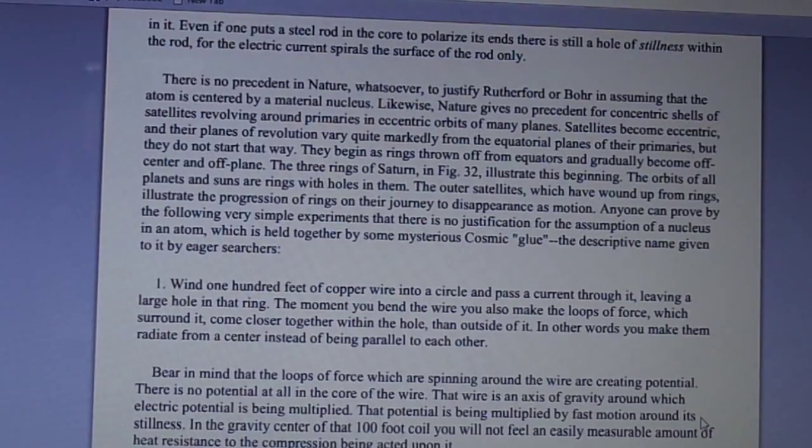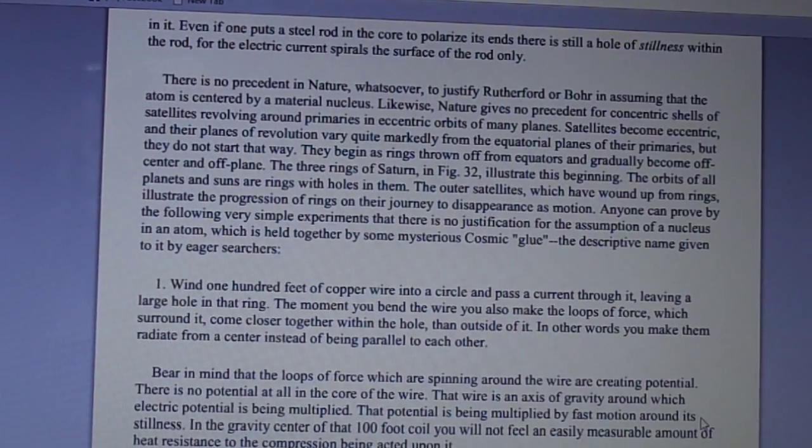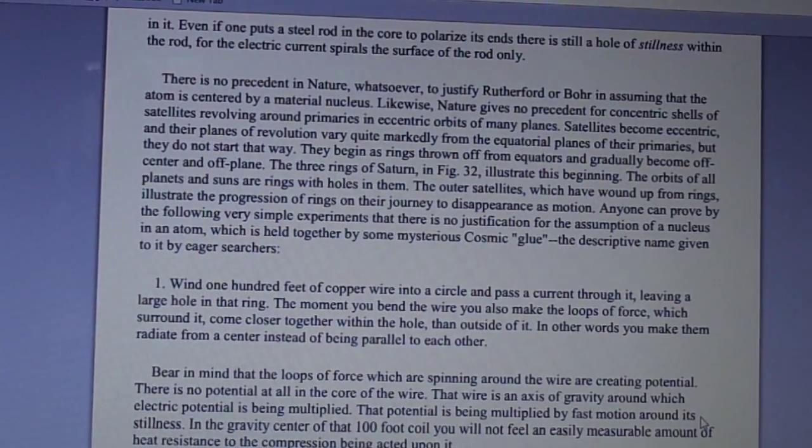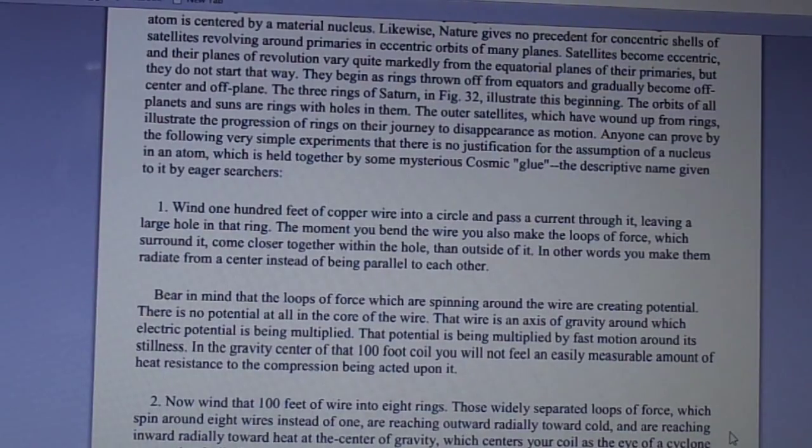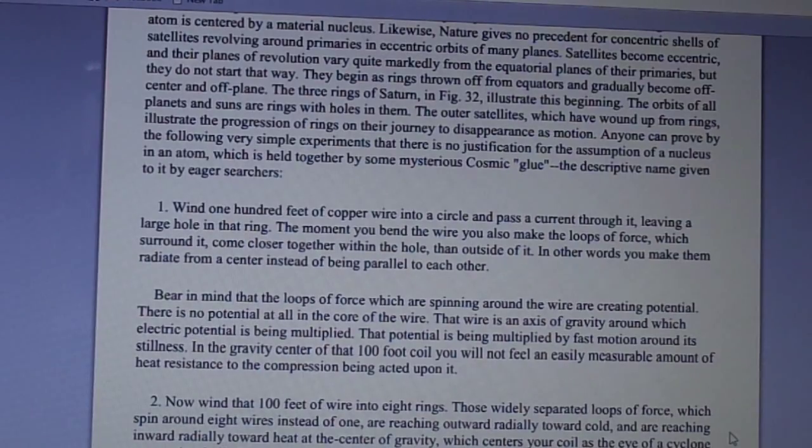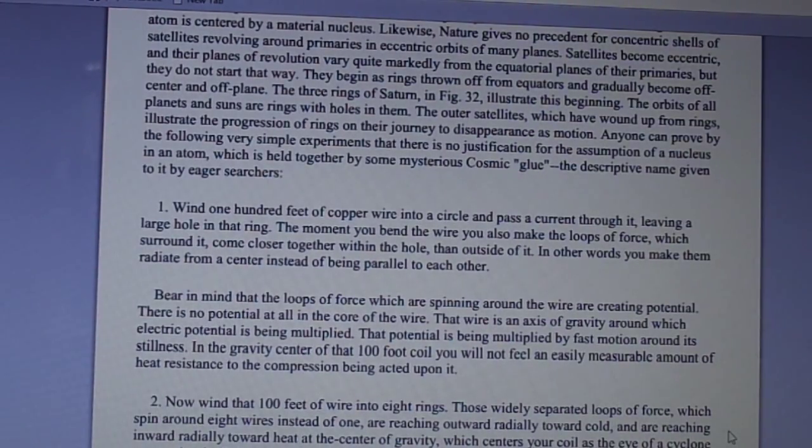Wind 100 feet of copper wire into a circle and pass a current through it, leaving a large hole in that ring. The moment you bend the wire, you also make the loops of force which surround it come closer together within the hole than outside of it. In other words, you make them radiate from a center instead of being parallel to each other. Bear in mind that the loops of force which are spinning around the wire are creating potential. There is no potential at all in the core of the wire. That wire is an axis of gravity around which electric potential is being multiplied. That potential is being multiplied by fast motion around its stillness. In the gravity center of that 100-foot coil, you will not feel an easily measurable amount of heat resistance to the compression being acted upon it.